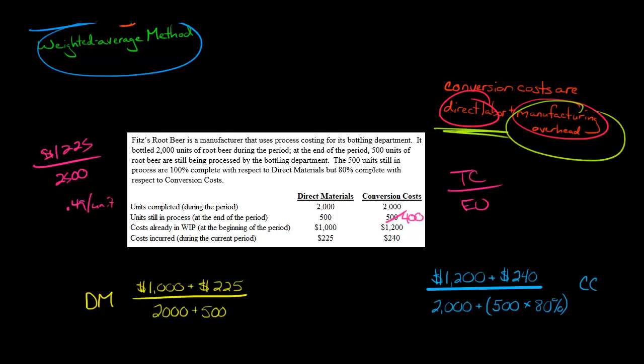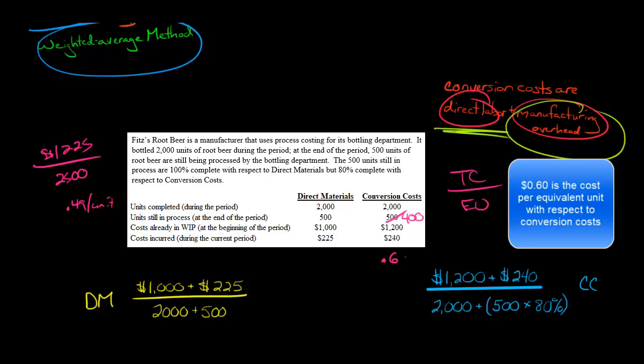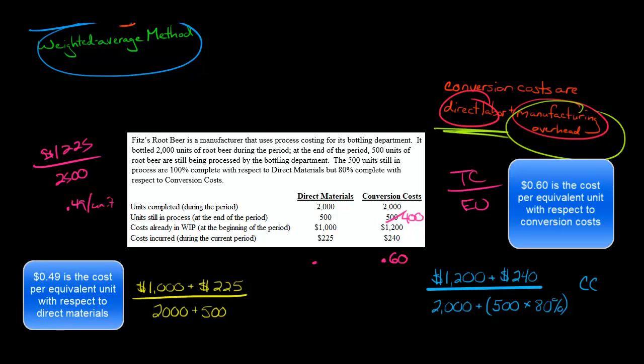We add that together, and that's $1,440. So $1,440 divided by 2,000 plus 400, which is 500 times 80%, and that's going to be 60 cents. So we had 60 cents for conversion costs and 49 cents for direct materials.